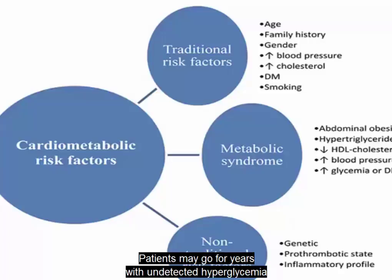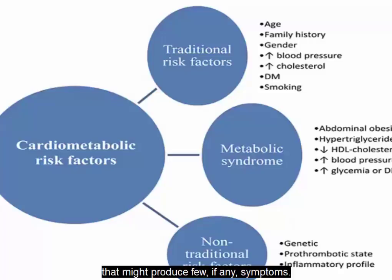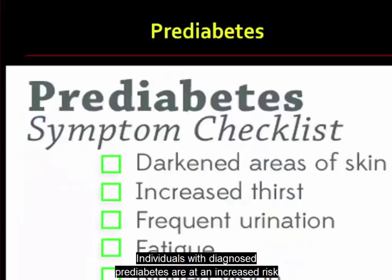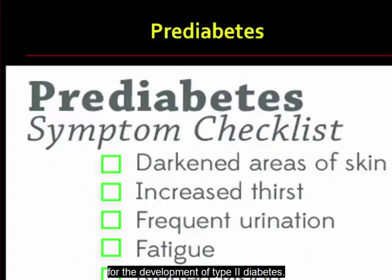The disease onset in type 2 diabetes is usually gradual. Patients may go for years with undetected hyperglycemia that might produce few, if any, symptoms. Many cases are diagnosed on routine lab testing or when patients undergo treatment for another condition and an elevated glucose or hemoglobin A1C level is found. Individuals with diagnosed prediabetes are at an increased risk for the development of type 2 diabetes.